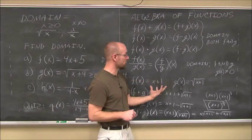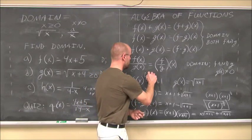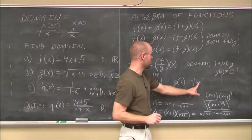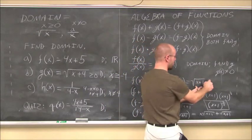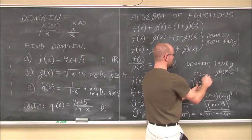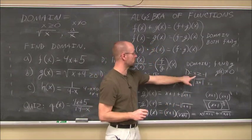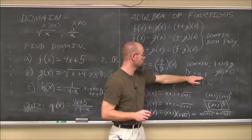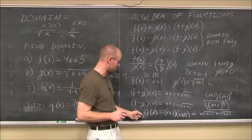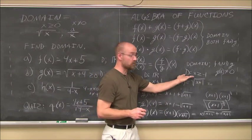One thing I forgot to do is look at the domains. For f(x) equals x plus 1, the domain is all real numbers. For g(x) equals the square root of (x plus 1), the value under the radical has to be greater than or equal to 0, so x must be greater than or equal to negative 1. The intersection of all real numbers and x ≥ -1 is x ≥ -1. This is the domain for the addition, subtraction, and multiplication of these functions.